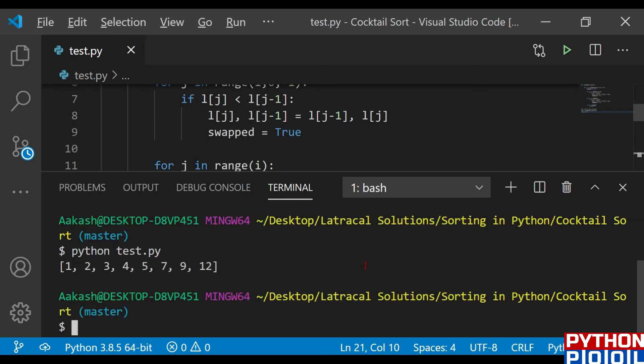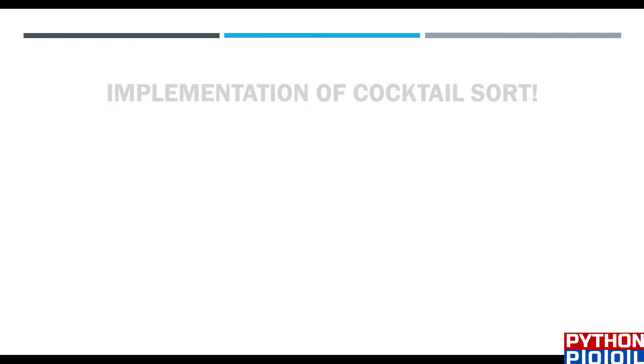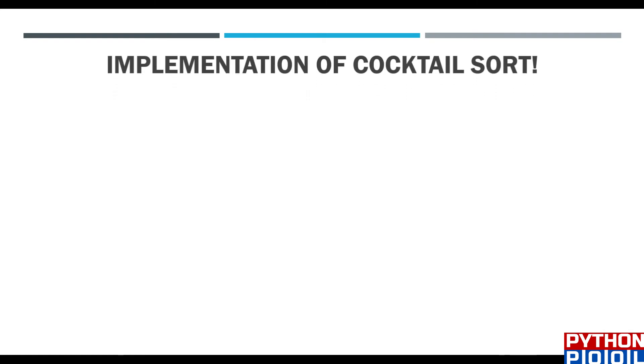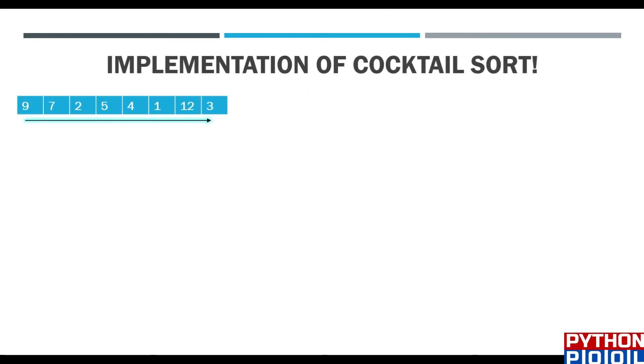You can see we got a perfectly sorted list. Now let's jump to the implementation walkthrough — how we actually implemented that for cocktail sort.